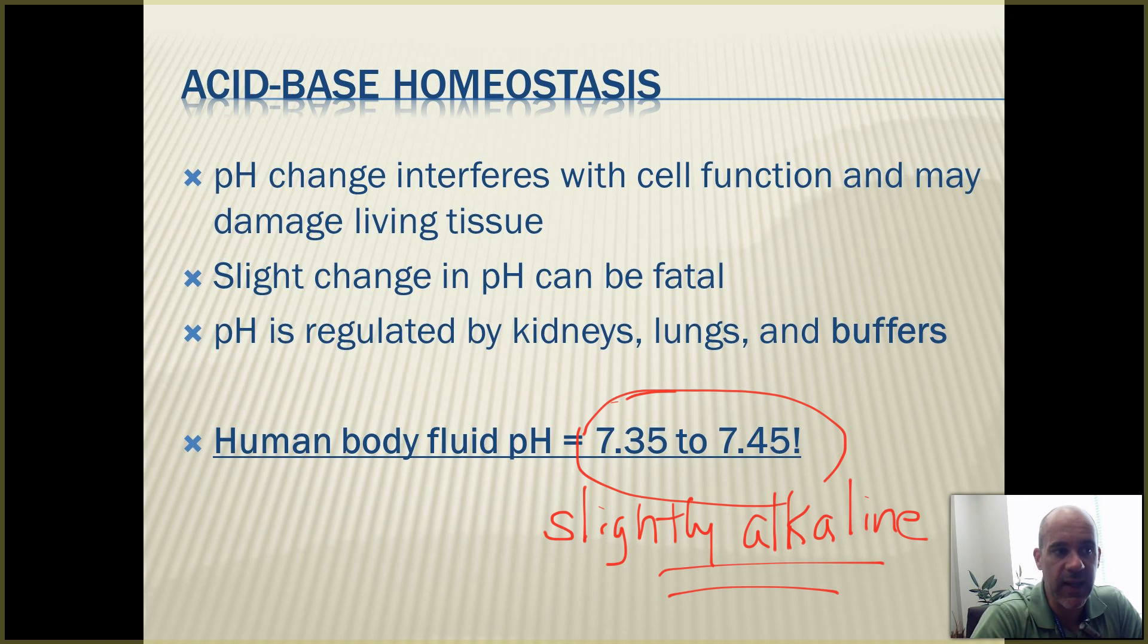pH is controlled by the kidneys, lungs, and buffers. Buffers are compounds that we have in our body fluids that help control pH. They soak up hydrogen ions if you have too many, or they give off hydrogen ions if you don't have enough in your body fluids. You'll learn more about that again when you get to biology 202.